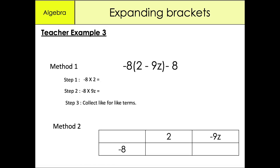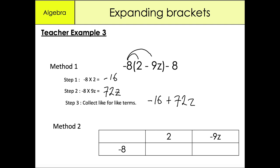This third example is very similar to the previous one, but the only difference is that we have a minus 8 at the end. I'm going to repeat the same process: minus 8 times 2 is minus 16, minus 8 times minus 9z is positive 72z. Now I collect like-for-like terms: minus 16 minus 8 gives us minus 24, plus 72z. So our answer is minus 24 + 72z.